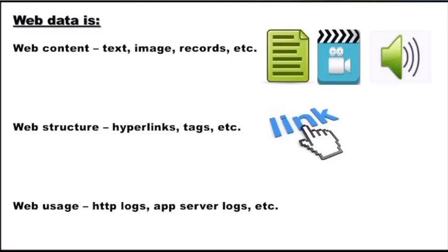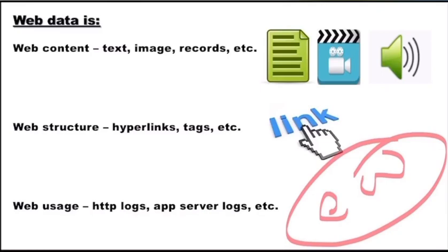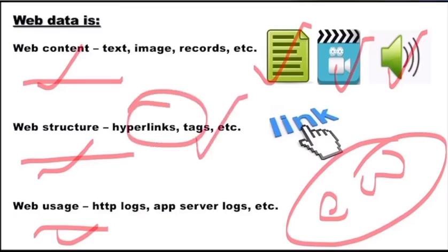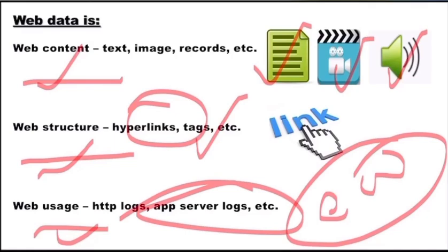Web mining में हम basically internet या websites को analyze करते हैं usage pattern को find out करने के लिए। जब हम internet या website को analyze करते हैं तो उसका data 3 categories में होता है: सबसे पहले web का content analyze करना, web का structure analyze करना, और उसका usage analyze करना। Web content में text, video, audio ये सारी चीज़ें आती हैं। Web structure में various tags और hyperlinks होते हैं वो consider करते हैं। Web usage में हम different logs create करते हैं — जैसे HTTP log, app server log, etc.